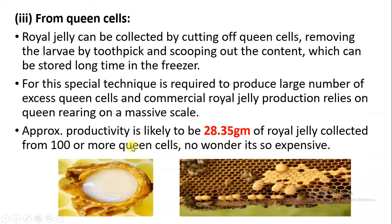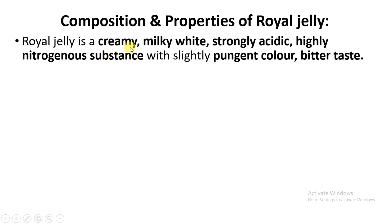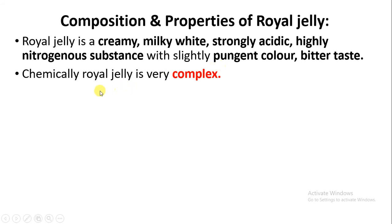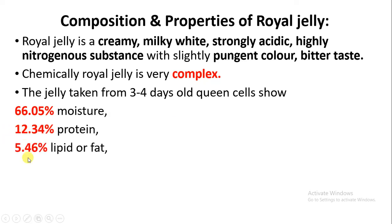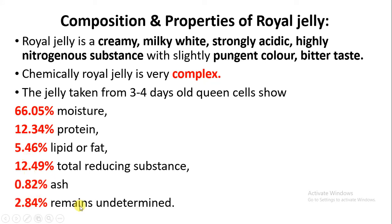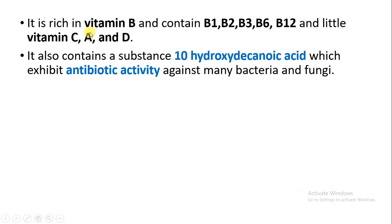This is why royal jelly is very expensive. Royal jelly is a creamy, milky, white, strongly acidic, highly nitrogenous substance with a pungent odor and a bitter taste. It is taken from 3 to 4 days old queen cells. In terms of composition, it consists of moisture, protein, lipid, fat reducing substances, some ashes, and some undetermined remains. It is also rich in vitamin B.